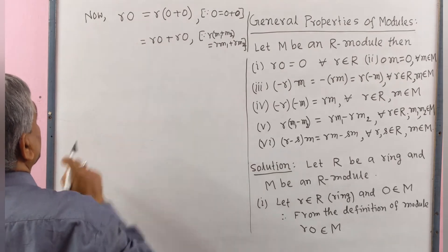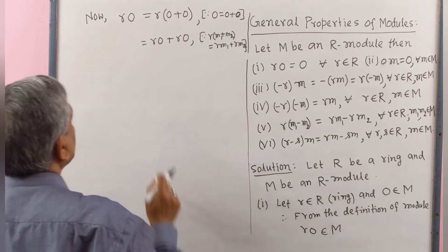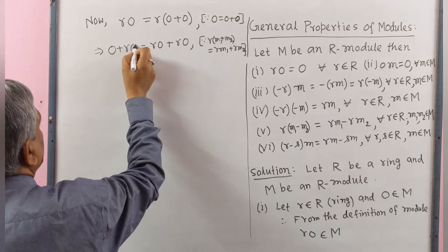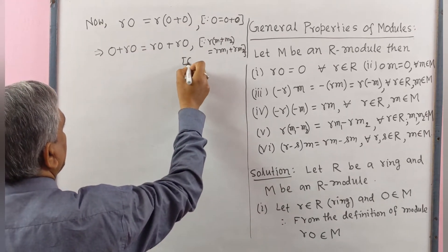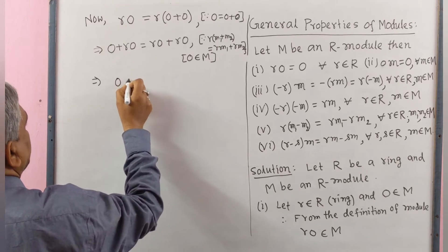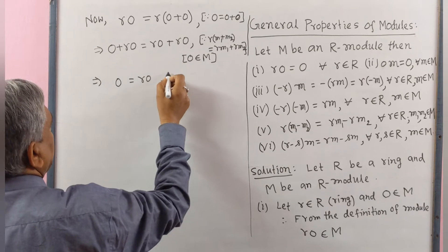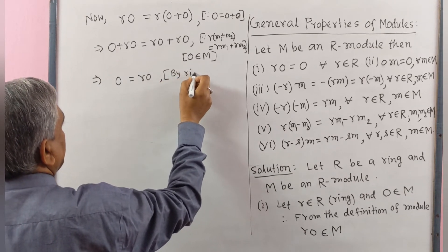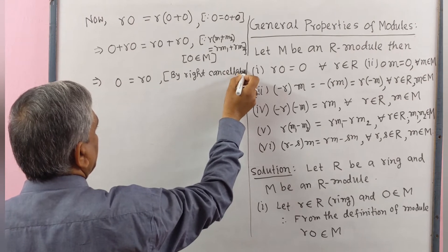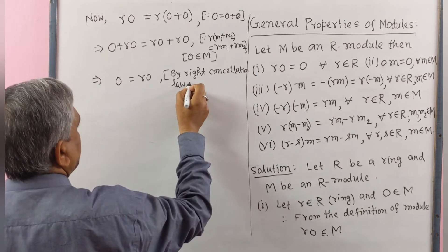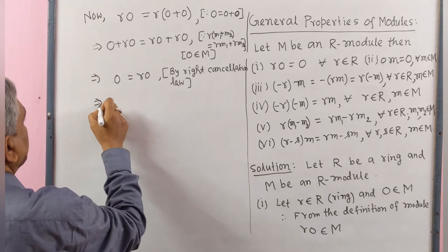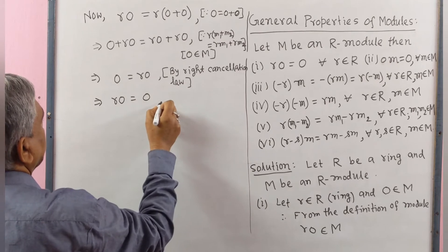Since r·0 belongs to M, we may write r·0 = 0 + r·0. By right cancellation law (since M is a group), this implies 0 = r·0, i.e., r·0 = 0. Property number one is proved.